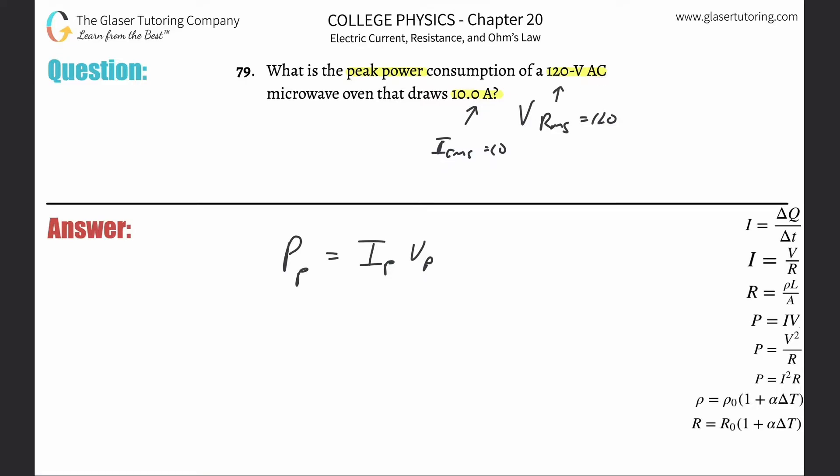So now if they had just asked what's the power consumption, you wouldn't even do any of this. Just plug in the values 120 times 10 because they're basically assuming you're calculating average power. But since they want peak, this is how we got to do it.